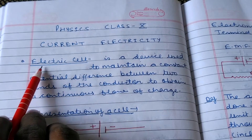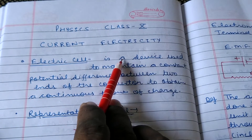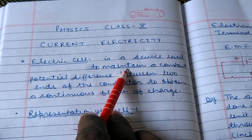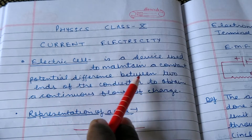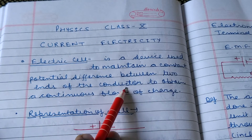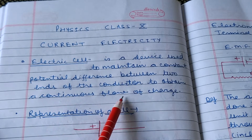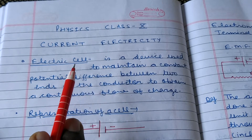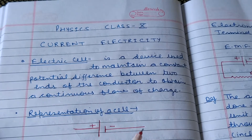First we will discuss what is electric cell. Electric cell is a device used to maintain a constant potential difference between two ends of the conductor to obtain continuous flow of charge. Without cell, you cannot flow the charge in one direction.